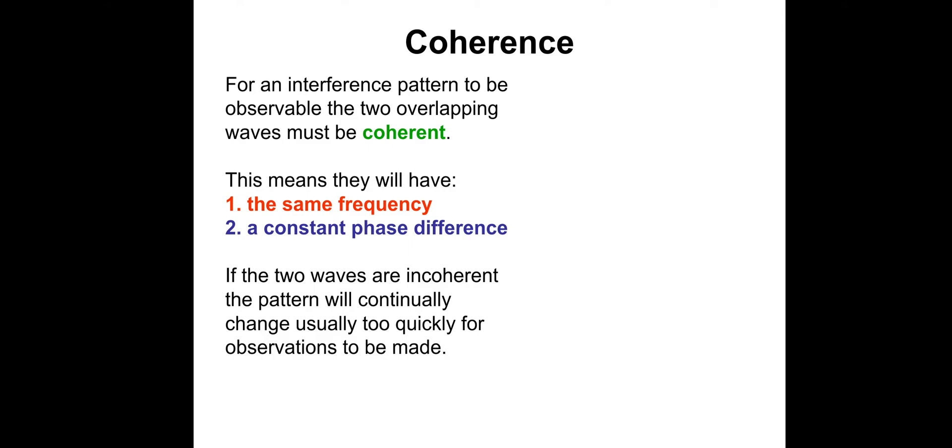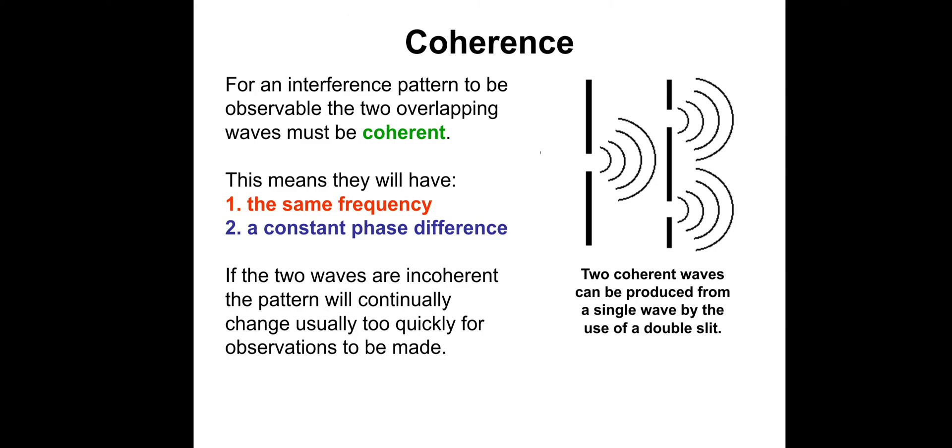If two waves are incoherent, the pattern will continually change, usually too quickly, for any observations to be made. And the example you will be quizzed on this is for the double-slit experiment, which we'll look at next lesson.